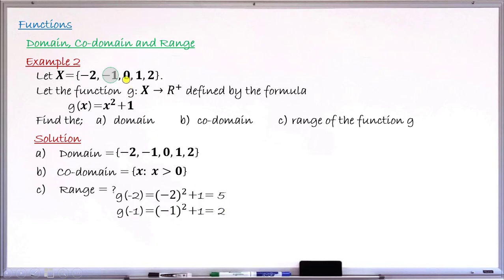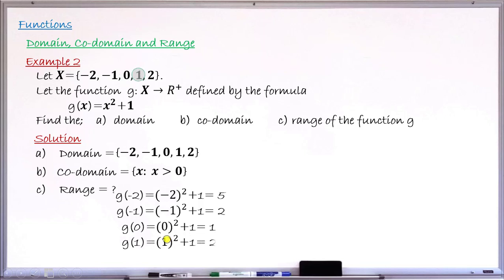Continuing: g(0) = 0² + 1 = 1. And g(1) = 1² + 1 = 2. And the last is g(2) = 2² + 1 = 5. Let me draw this so you can see it clearly. This is your function g, with the first set X containing elements minus 2 to 2, mapping into the second set of positive real numbers.